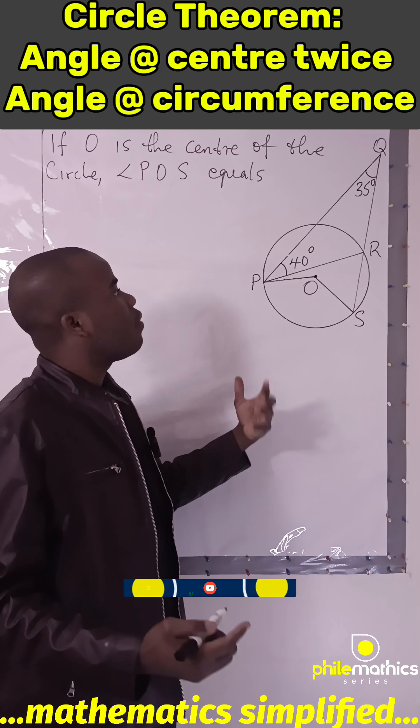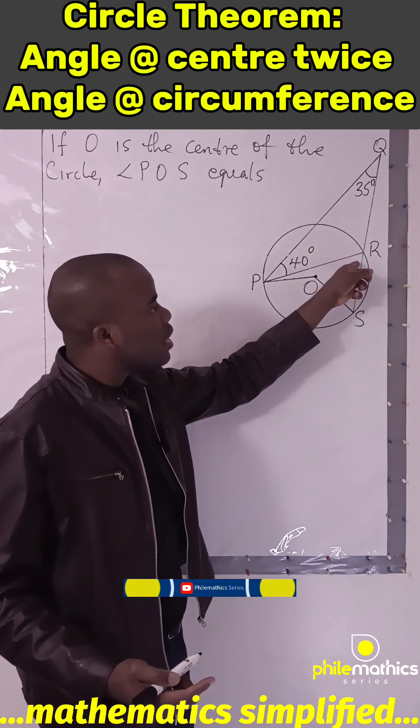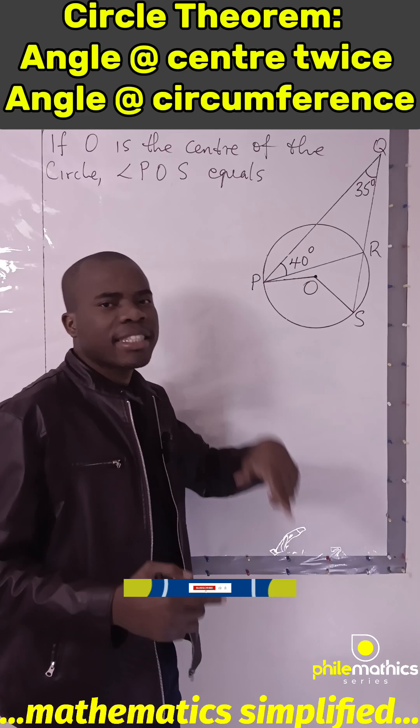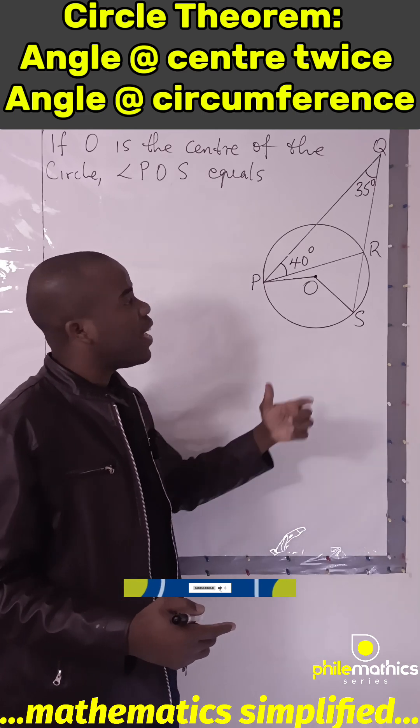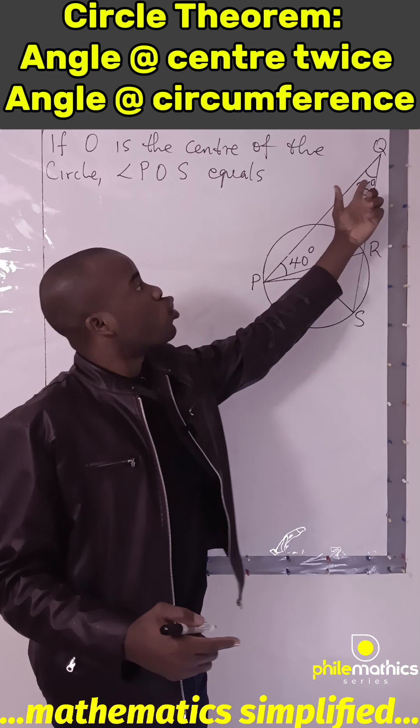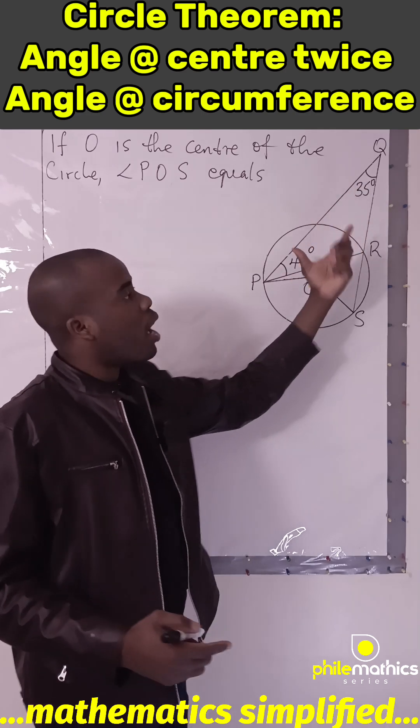But to make it faster, I can get what this is from the sum of these two angles. Because the exterior angle of a triangle is the sum of the two opposite interior angles.